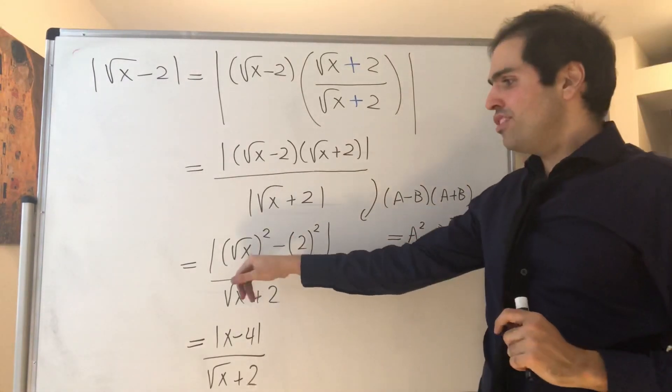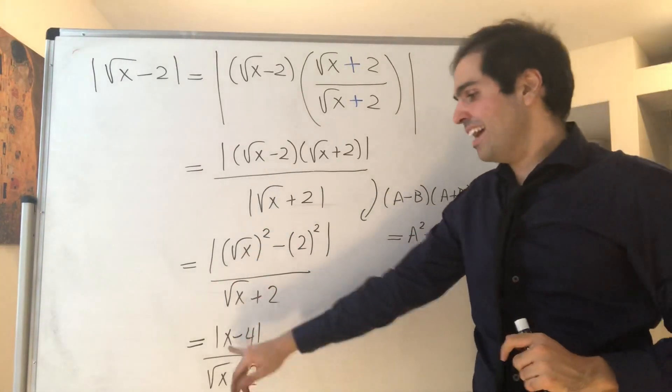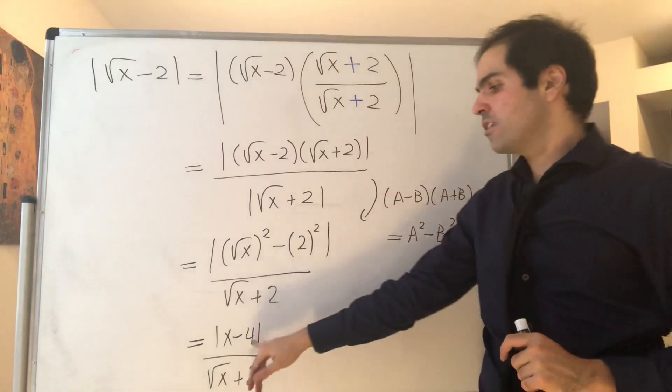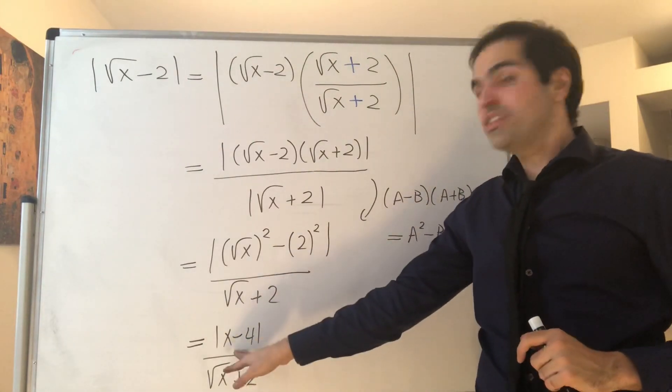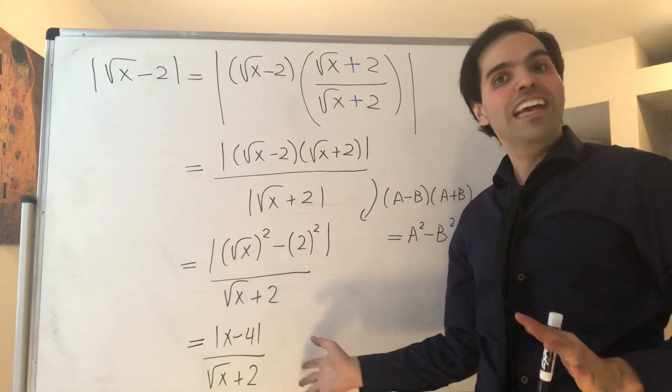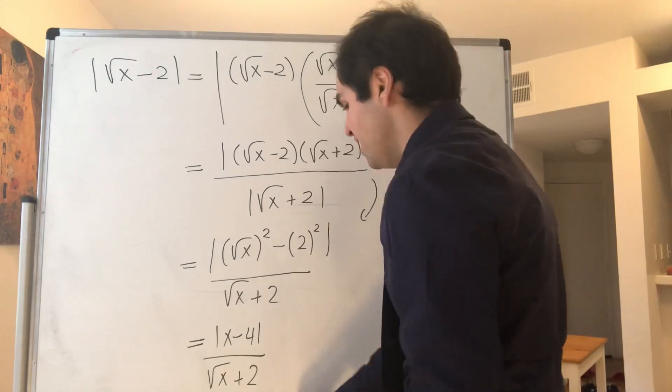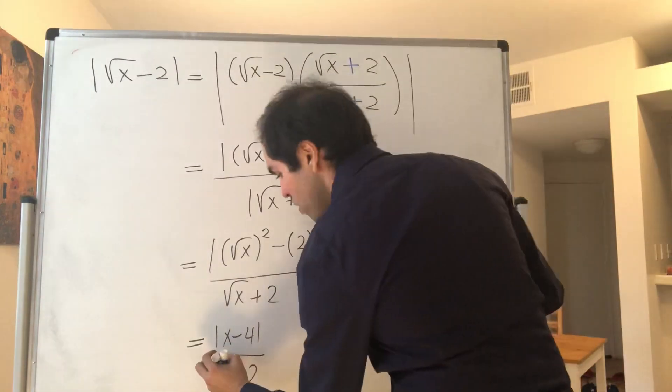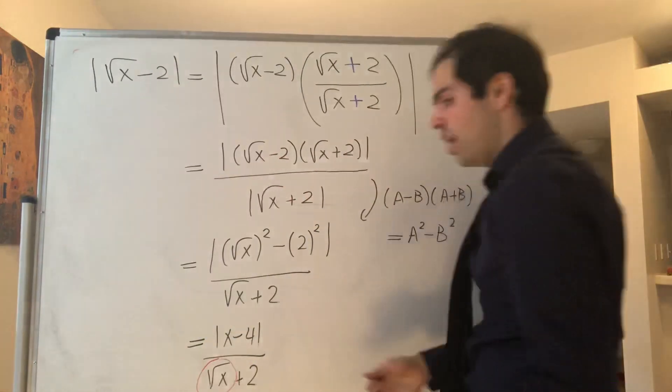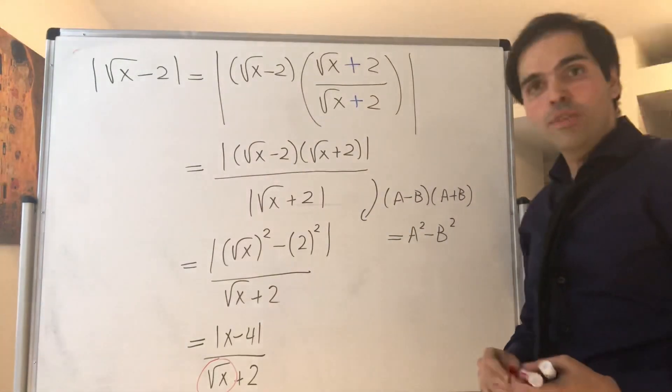Here's the miracle. If you do square root of x squared, you get x. And if you do 2 squared, you get 4, which is precisely the stuff that we can control. It's the stuff that's less than delta. The only pesky thing here is this square root of x.